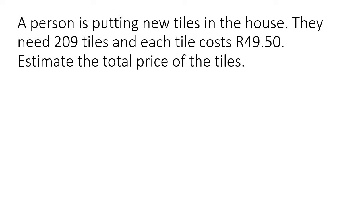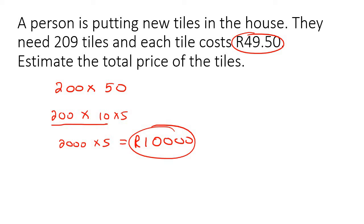A person is putting new tiles in their house. They need 209 tiles and each tile is going to cost 49 rand 50. Estimate the total price. So let's say you and your parents are busy shopping for new tiles and whoever you're with, they just want to get a good idea of what the cost is. They don't need to get the exact cost. So no one has a calculator. So what you could do is you could just change this to 200 and then you could just say that each of them are 50 rand. So then you could say 200, then you could change 50 into 10 multiplied by five. 200 multiplied by 10, that's 2,000. And 2,000 multiplied by five, that's 10,000 rand. So you could then tell your parents that it's going to cost about 10,000 rand.